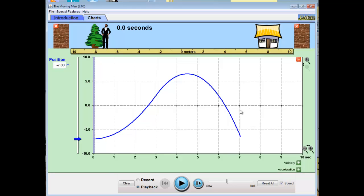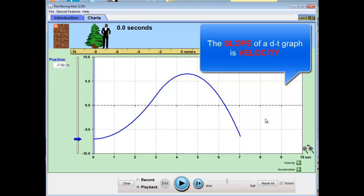Now, again, the key to analyzing the motion on a position-time graph is the slope. The slope of a d-t graph or a position-time graph is velocity, and we want to look at the slope and talk it through to see if we can figure out what's going on with the motion of the man.